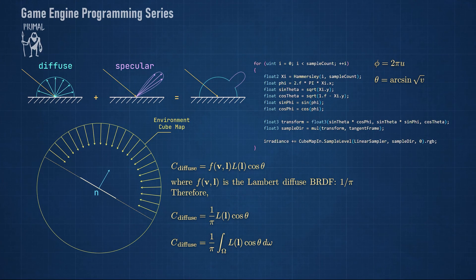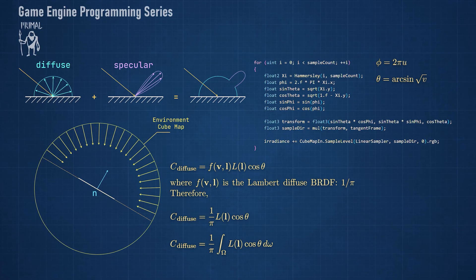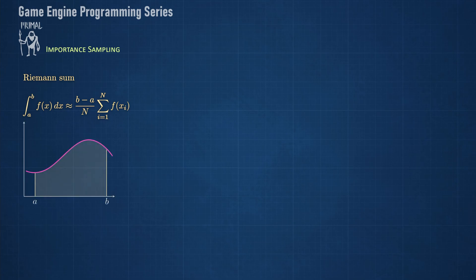Before discussing the theory of importance sampling, let's first have a look at the Riemann sum again, which was also introduced in the previous episode. Here I explained that an integral of a function corresponds to the area that's enclosed between the function and the horizontal axis within a given interval between A and B. The space between A and B is also called the integration domain. The Riemann sum states that this area can be approximated by dividing the interval into subintervals and adding up the areas of all rectangles.